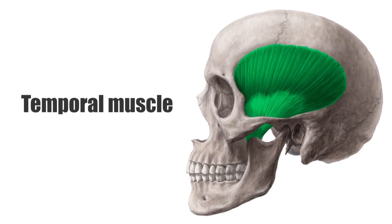Hello again, this is Matt from KenHub, and in this tutorial, we will discuss the function and anatomy of the temporalis muscle. The temporal muscle, also known as the temporalis, is a flat, fan-shaped muscle of mastication on the lateral side of the skull.